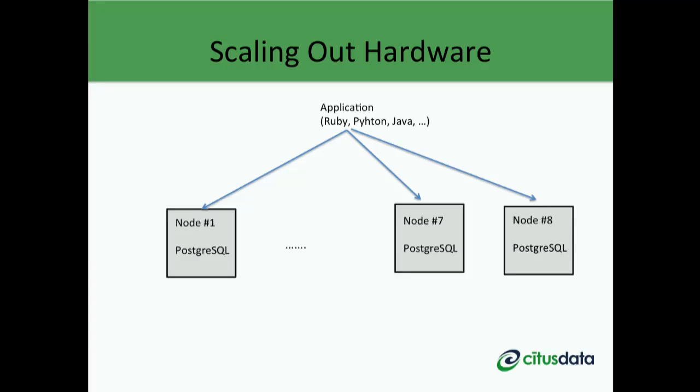When you scale out, you can continue to scale your CPU, memory, and storage resources by adding new machines into your cluster. This approach is also known as horizontal scaling, and we're going to focus on this for the rest of our talk.